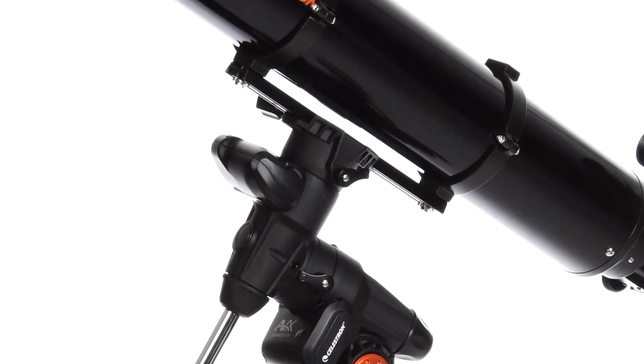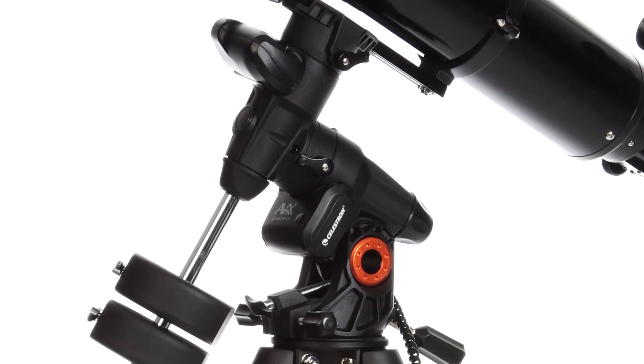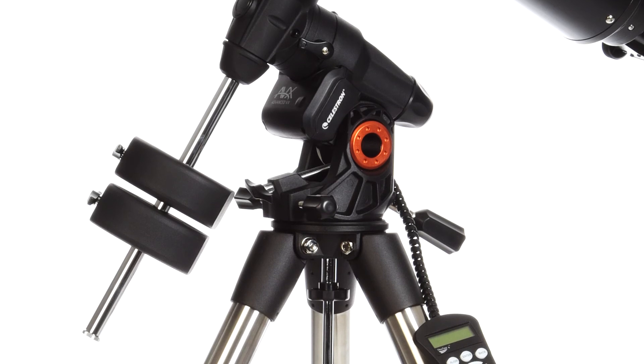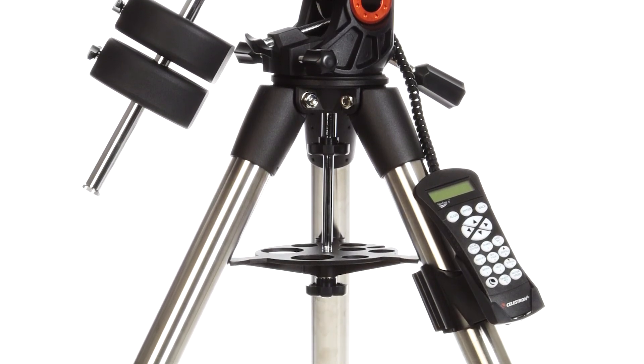Engineered from the ground up, Advanced VX is a rock solid base for your Celestron 6-inch refractor. Improved motors with more torque handle slight load imbalances with ease. You'll also find sturdy 2-inch tripod legs for increased rigidity.